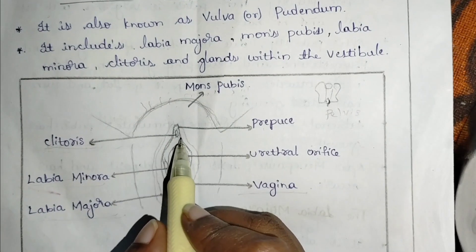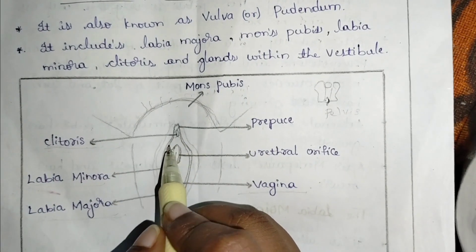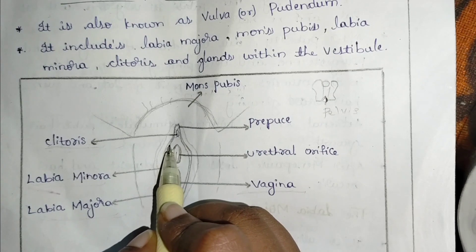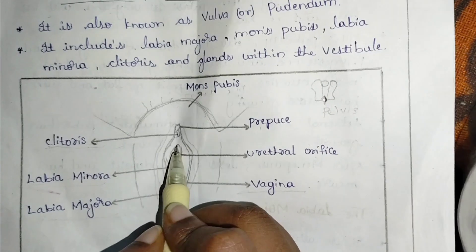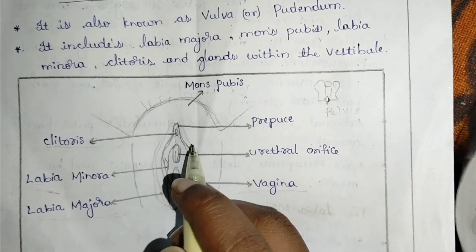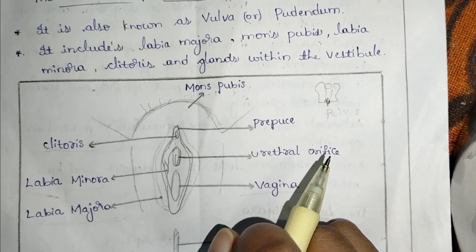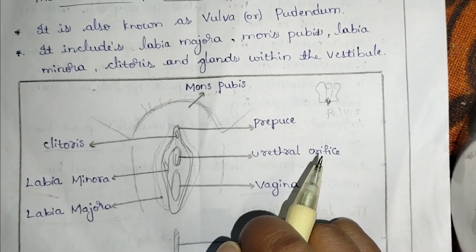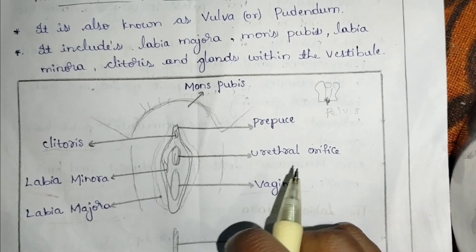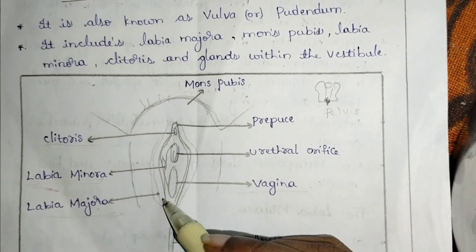Clitoris is also present above the symphysis pubis. It is around 2 to 3 centimeters in length. It is also known as an erectile organ, in the sense that it is very helpful in sexual pleasure.